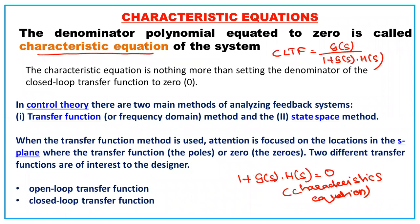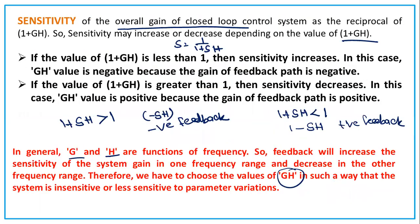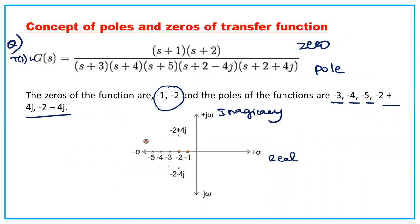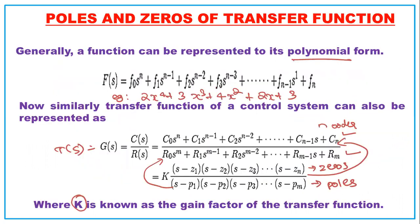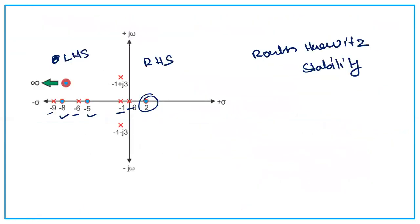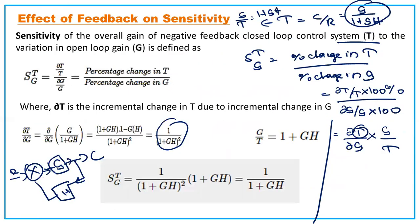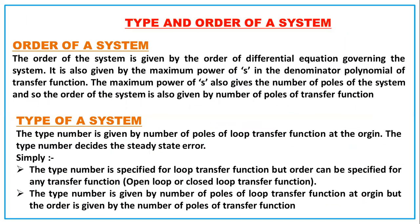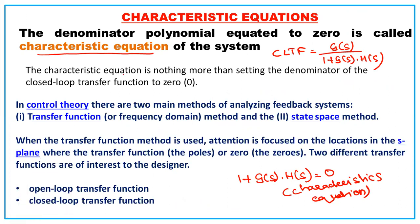We have seen how to represent the transfer function in numerator-denominator form. If that denominator polynomial is equated to zero, it forms the characteristic equation. In the closed-loop transfer function G(s) / (1 + G(s)H(s)), it is the denominator 1 + G(s)H(s) set equal to zero that is the characteristic equation. So the characteristic equation is simply setting the denominator of the closed-loop transfer function equal to zero.